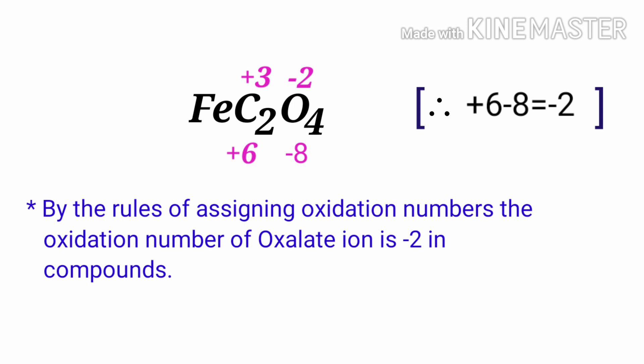So, the number under Fe must be plus two. So, the oxidation number of iron is plus two.